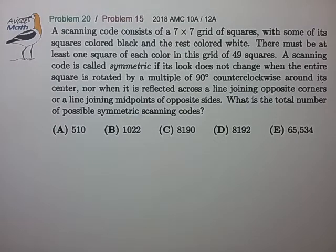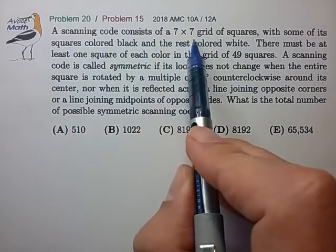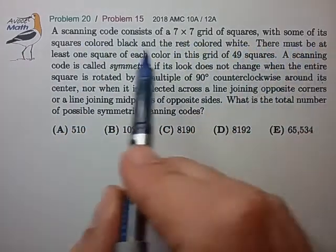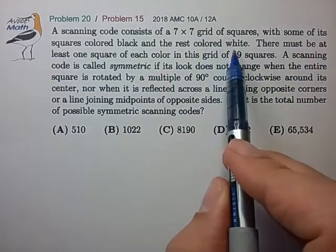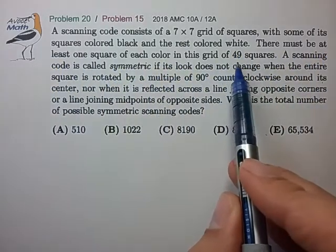Hi, this is problem 20 from the 2018 AMC 10A. A scanning code consists of a 7×7 grid of squares, with some squares colored black and the rest white. There must be at least one square of each color in this grid of 49 squares.